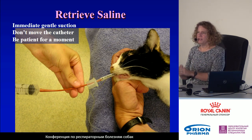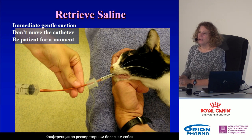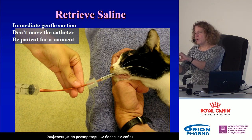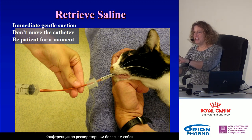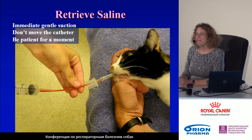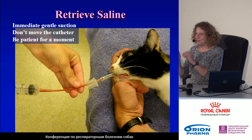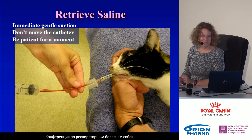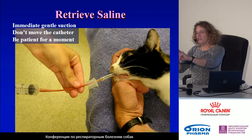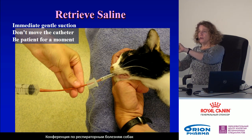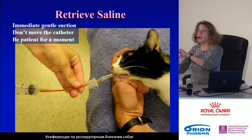Apply gentle negative pressure and be patient for a moment. There's always a brief moment where you start to pull back and nothing's coming, and you think it's all going to stay in there. But if you wait just a little, the fluid will come. As it starts to come back and then slows down, you can gently pull your catheter back a little and often still hit another pocket of fluid.